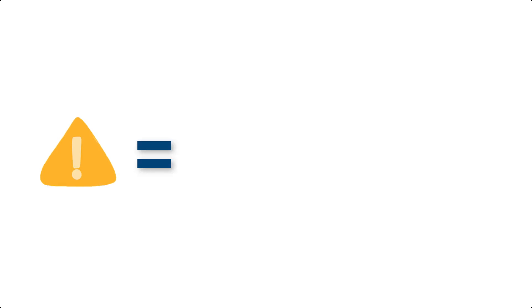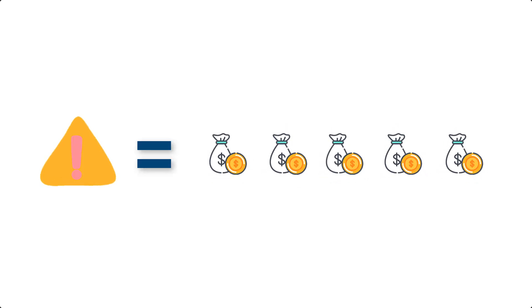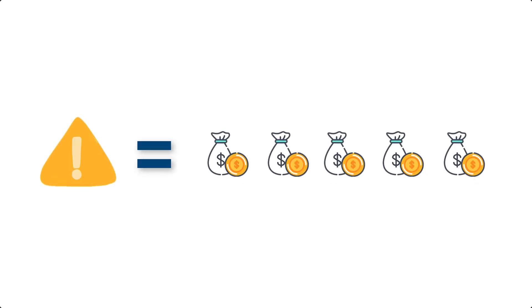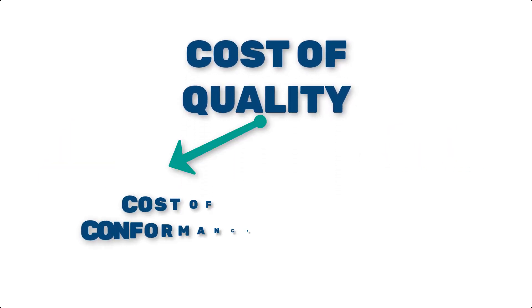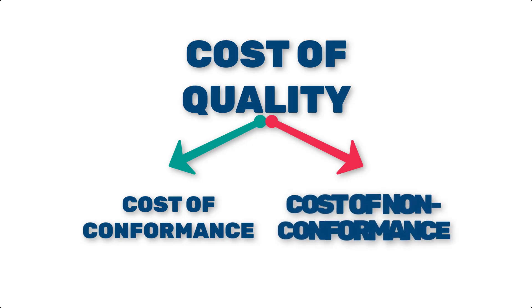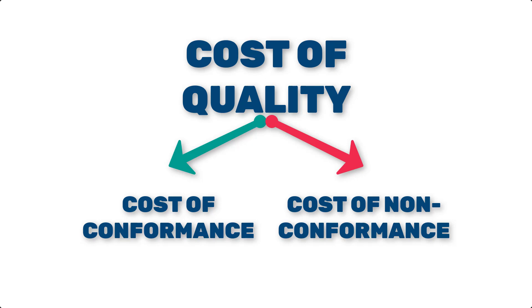Did you know that fixing a mistake can cost up to five times more than preventing it? Understanding the difference between the cost of conformance and cost of non-conformance is critical for businesses that want to succeed in the long run. Let's break this down together.